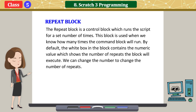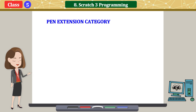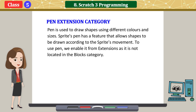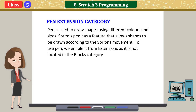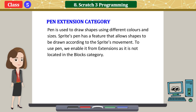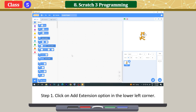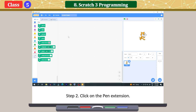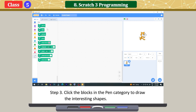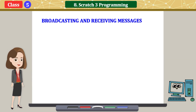Pen extension category: pen is used to draw shapes using different colors and sizes. The sprite's pen has a feature that allows shapes to be drawn according to the sprite's movement. To use pen, enable it from extensions since it is not located in the blocks category by default. Click 'Add Extension' in the lower left corner, choose an extension window, click on the pen extension, and it appears in the blocks category. Click the blocks in the pen category to draw interesting shapes.